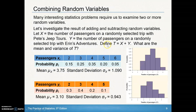What we're going to look at is defining T — we're going to take Pete's Jeep Tours and add Erin's Jeep Tours, then look at the mean and the variance of that total. There's a key thing: we're going to be looking at the variance, not standard deviation. Remember, variance is the square of standard deviation, or standard deviation is the square root of variance. We're going to keep these probability models in mind as we move forward.